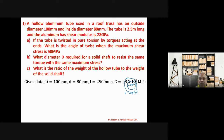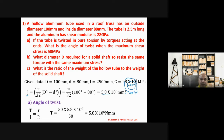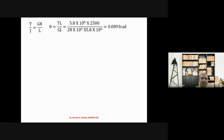The tube is twisted in pure torsion by torques acting at the ends, and we have to find the angle of twist. Using the torsion formula T/J = τ/r, with maximum shear stress τ = 50 MPa, J = 5.8 × 10⁶ mm⁴, and radius r = 50 mm, we get T = 5.8 × 10⁶ N·mm.